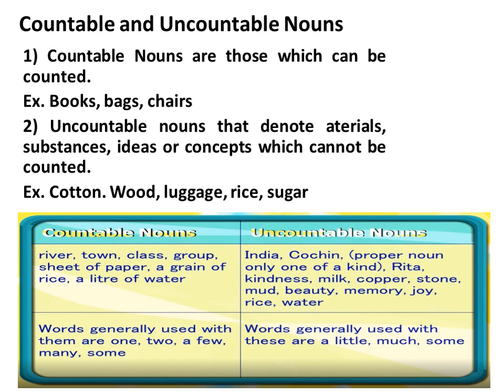You cannot count cotton — you cannot say 'one cotton, two cotton.' Similarly, you cannot count wood, luggage, rice, or sugar. So these are known as uncountable nouns which cannot be counted.